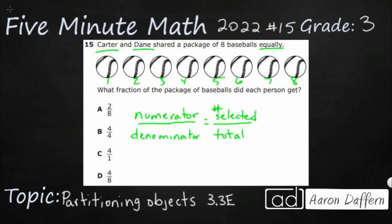The numerator is the number selected or the number chosen, and the denominator is always going to be the total. So how many total? Well in this case they actually give us the total — it's out of eight because there are eight total baseballs. Now let's see if they share the package equally, and what if we divided by two, because there are two names here: Carter and Dane.